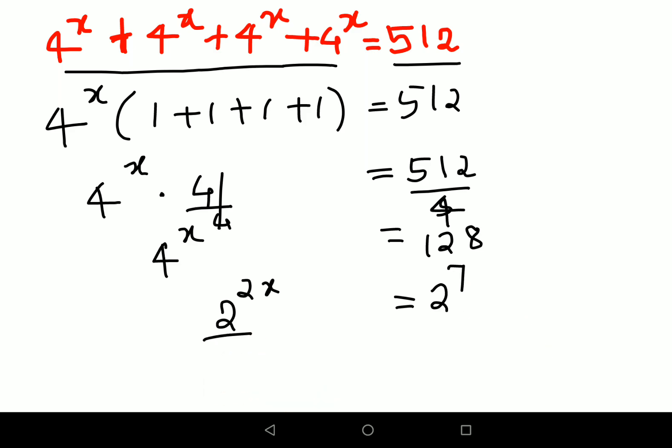So now since the bases are the same, I can say therefore 2x = 7, so the value of x is 7/2, or you can also write this as x = 3.5. So that's it for today, I will see you in the next video.